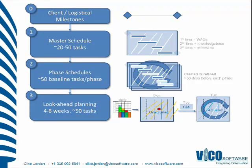This is where most of the changes occur through look-ahead planning with location-based management. We have a clear and simple way of updating progress: in the control chart, we simply tick boxes to show which areas of which tasks have been completed. This is reviewed on a daily basis — it's easy to do daily because it's just ticking when things started and finished in each location.